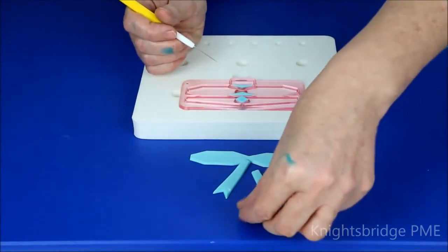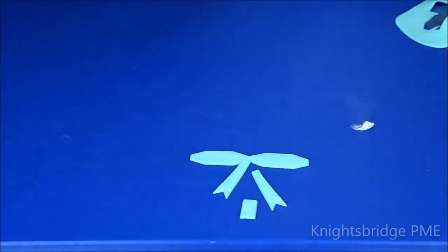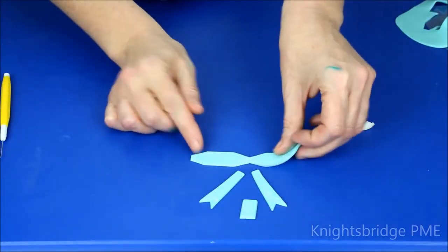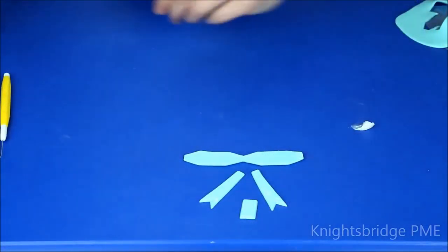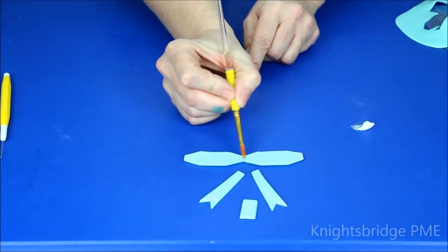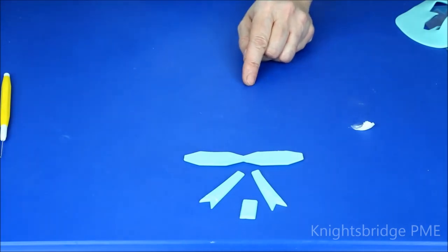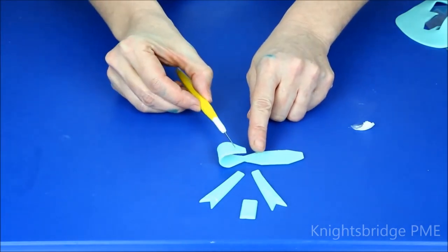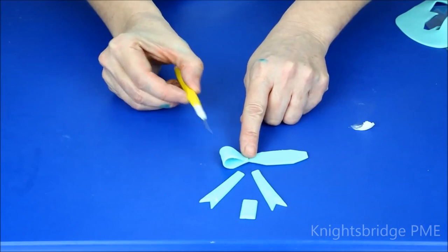And this is going to be my center section, like so. I'm just going to turn this over and add a little bit of sugar glue just to the center. I'm just going to flip my paste straight over into the center.